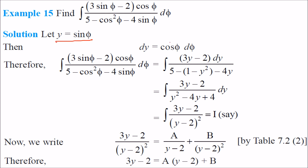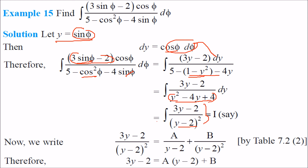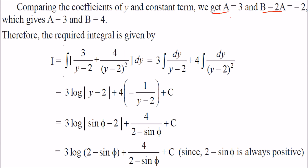Don't worry about φ — it is just equivalent to x via substitution. Put y = sin φ, so dy = cos φ dφ. Then cos²φ = 1 − sin²φ = 1 − y². The expression 3y−2 in the numerator leads to y²−4y+4 = (y−2)² in the denominator. So we decompose (3y−2)/(y−2)² = A/(y−2) + B/(y−2)². Equating with 3y−2 gives A = 3 and B = 4.